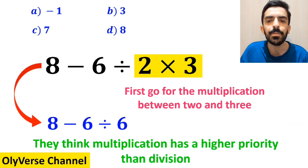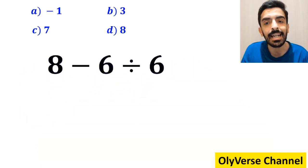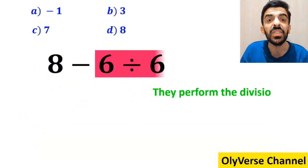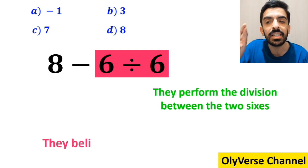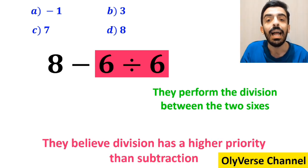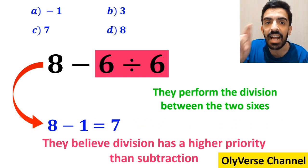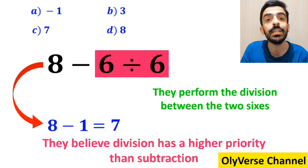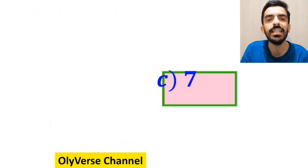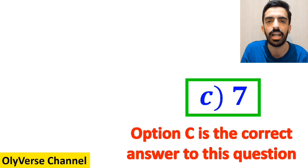So they rewrite this expression as 8 minus 6 divided by 6. In the next step, they perform the division between the two sixes since they believe division has a higher priority than subtraction, and they simplify this expression to 8 minus 1, which finally gives them the answer 7. Then, without any hesitation, they quickly say that option C is the correct answer to this question.